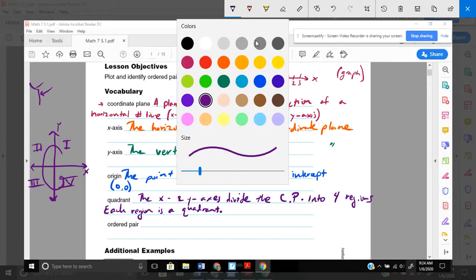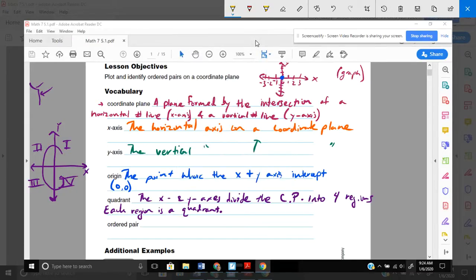And then lastly, to finish it out, ordered pair. An ordered pair is a pair of numbers that can be used to locate a point on the coordinate plane. And an ordered pair looks like this. Before how I had zero, zero. First, you list your X coordinate. And second, you list your Y coordinate. And that's always, always, always. It's alphabetical order.